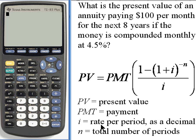So i is the rate per period as a decimal. To find the rate per period, we want to take the rate per year as a decimal, that's 0.045, and divide that by the number of periods per year, and it's going to be 12.